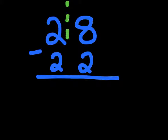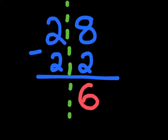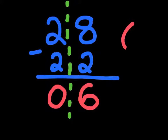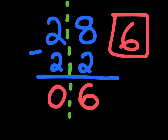Let's go on to another question: 28 minus 22. We break this up into two columns. The right hand column subtraction is 8 minus 2, which is 6. Then the left hand column subtraction is 2 minus 2, which is 0. So the answer to 28 minus 22 is just 6.